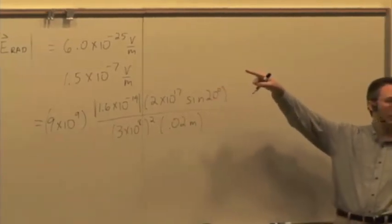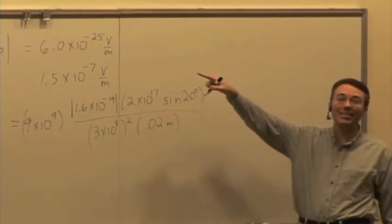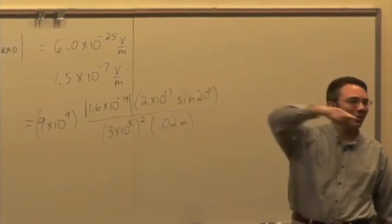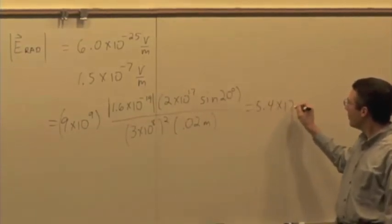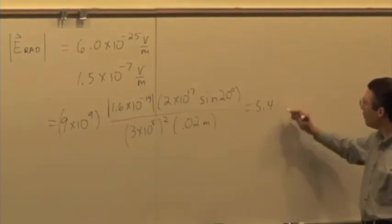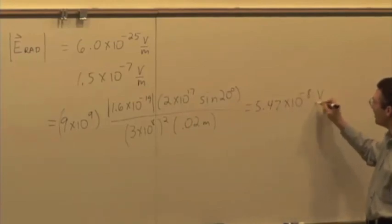So what does that give you? Does that give you 1.5 times 10 to the minus 7? What is it? 17th? 5.4. 5.47 times 10 to the minus 8 volts per meter.